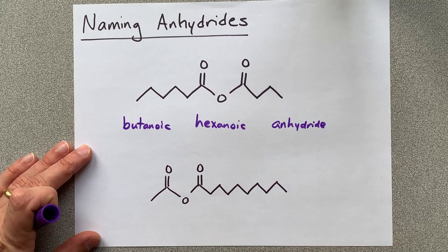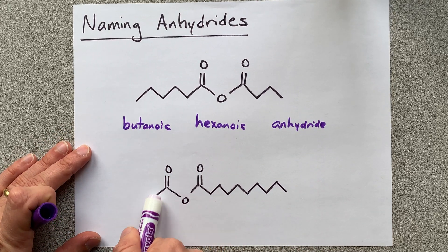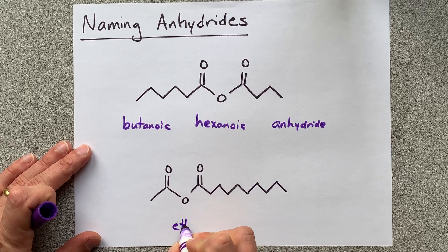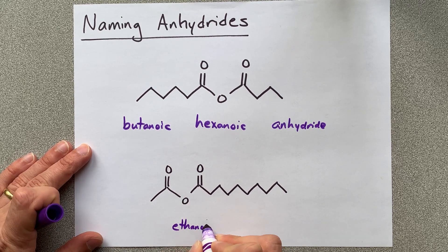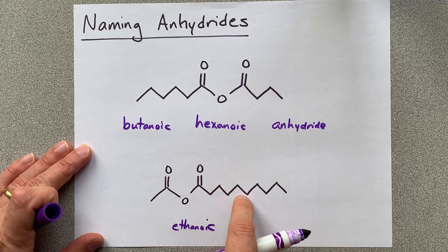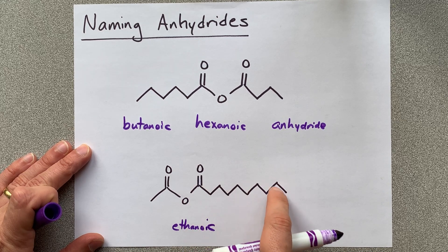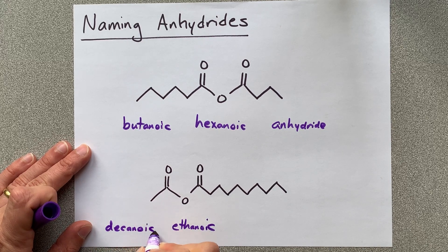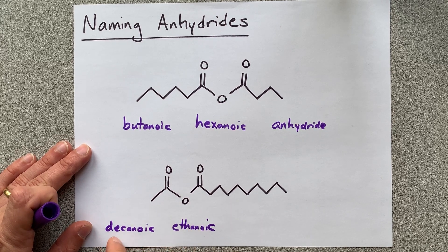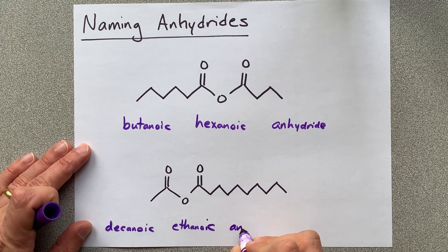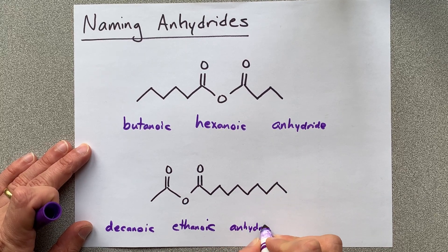Let's do that just one more time. This is two carbons long — that's ethanoic. This other chain is one, two, three, four, five, six, seven, eight, nine, ten carbons long — that is decanoic. D comes before E, so we'll put it before ethanoic. And the third word is anhydride.